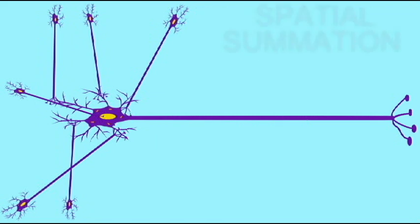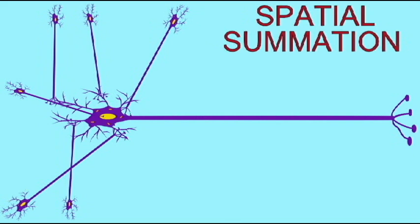Now, some of these pre-synaptic neurons are releasing neurotransmitters which depolarize the post-synaptic neuron. In other words, their effects are causing excitatory post-synaptic potentials, or EPSPs.